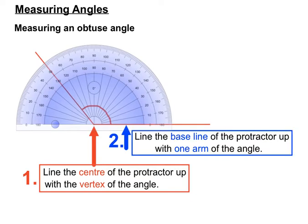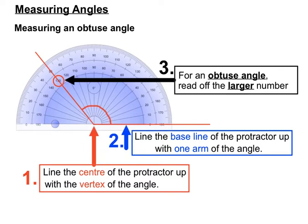We'll make sure that the baseline of the protractor is lined up with one of the arms of the angle. And this time though, for an obtuse angle, we'll read off the larger of the two numbers.